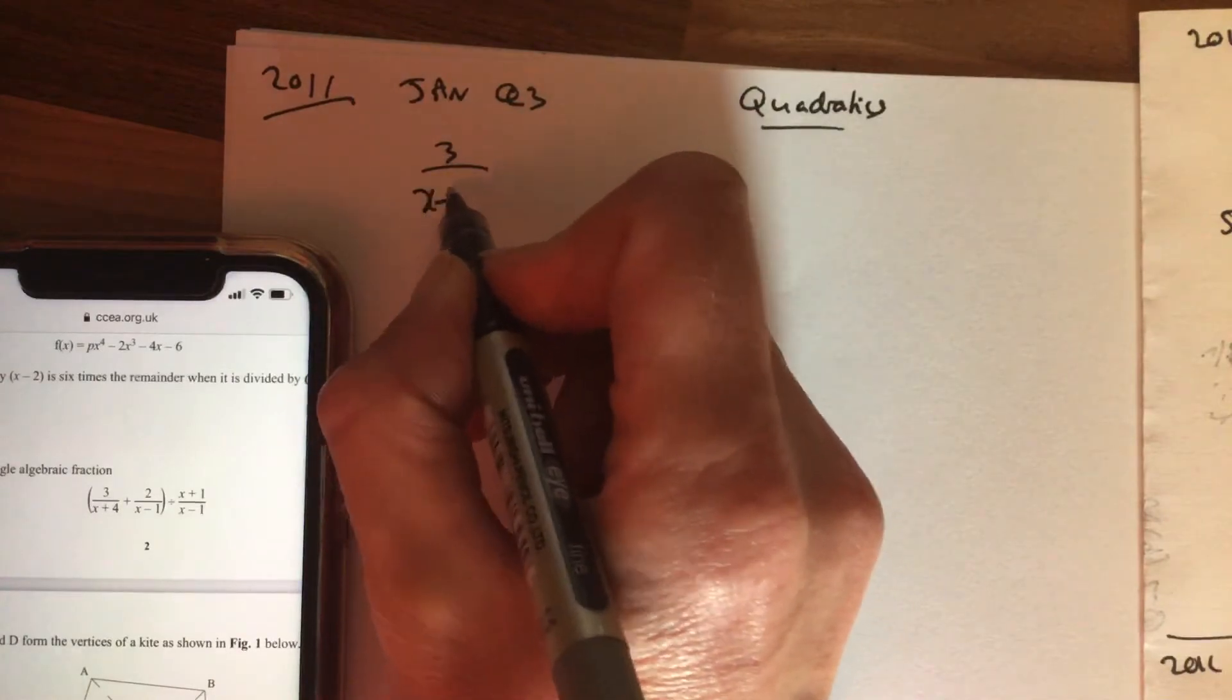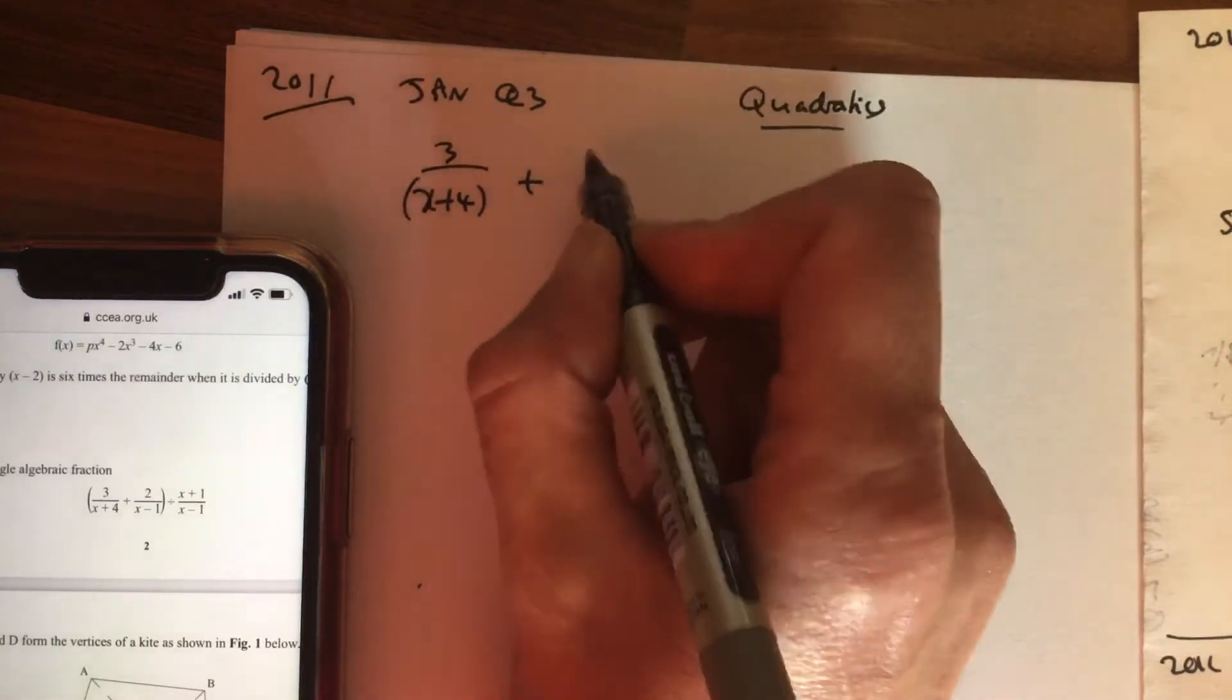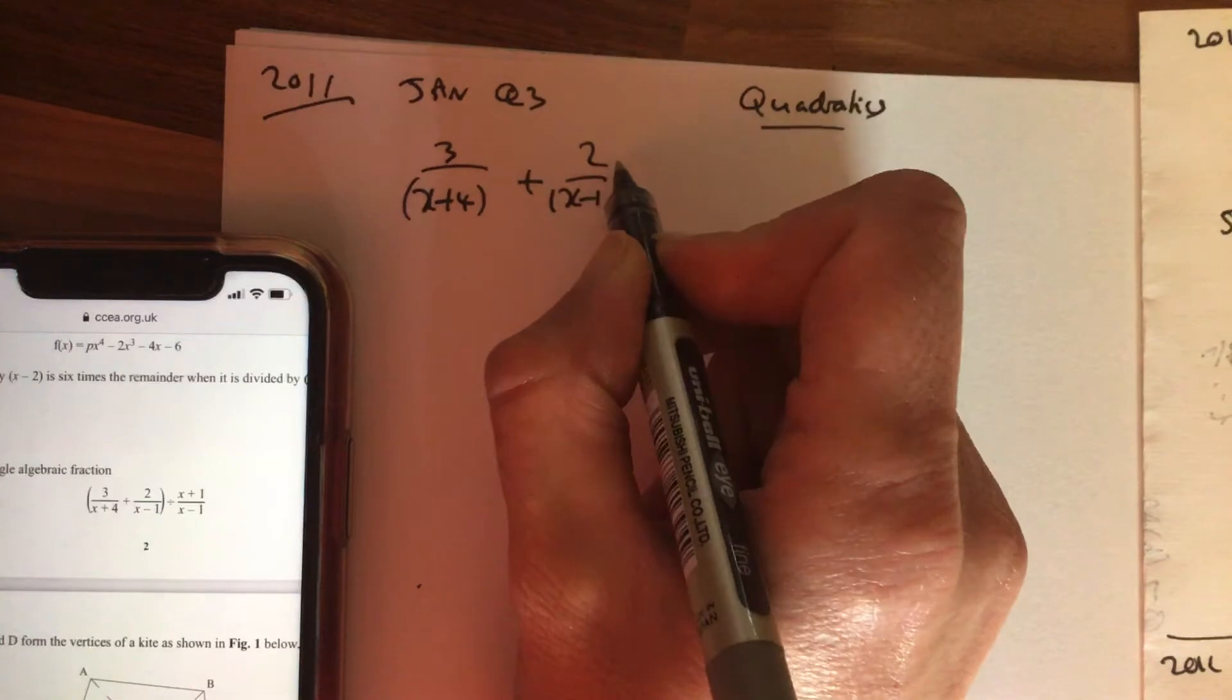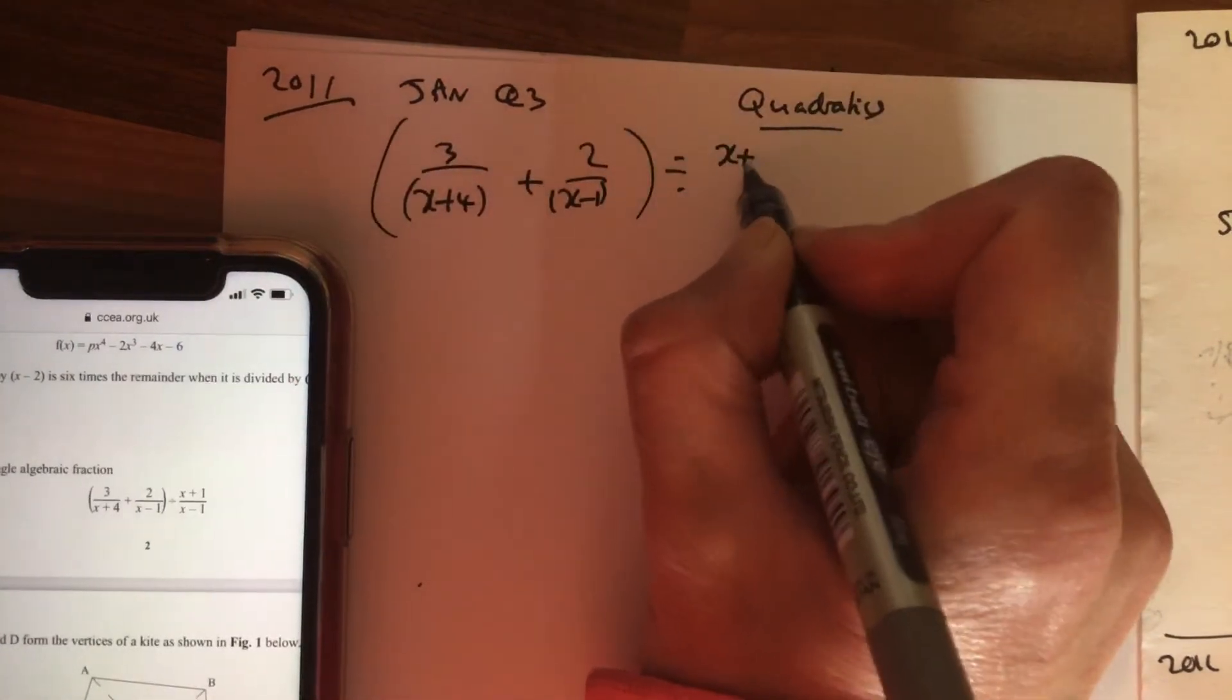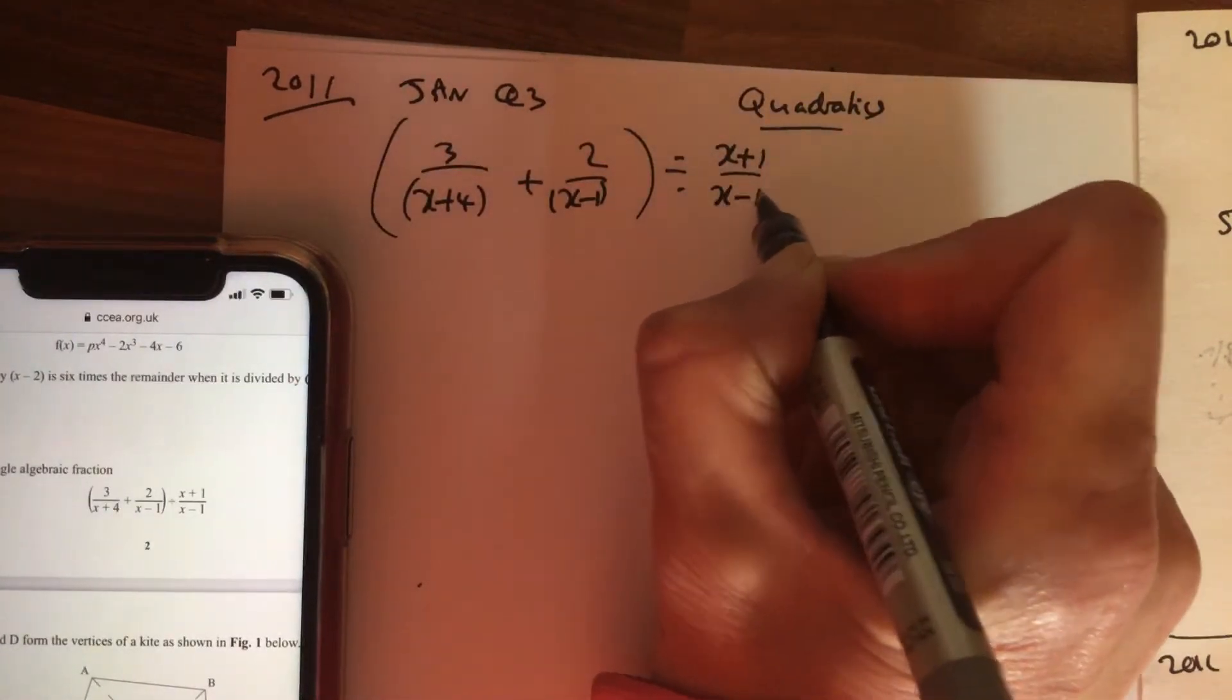So 3 over x plus 4, add 2 over x minus 1, divided by x add 1 over x minus 1.